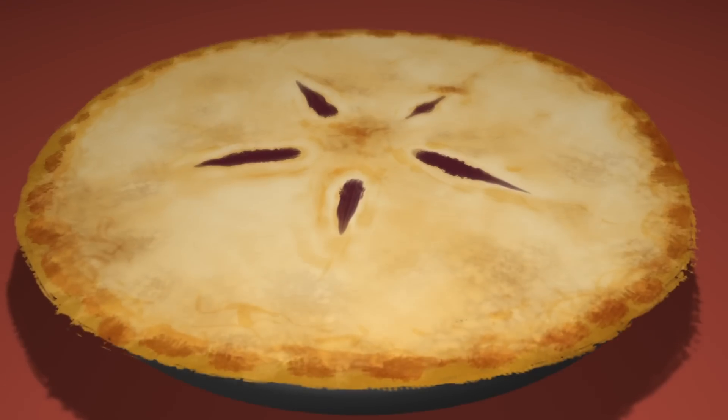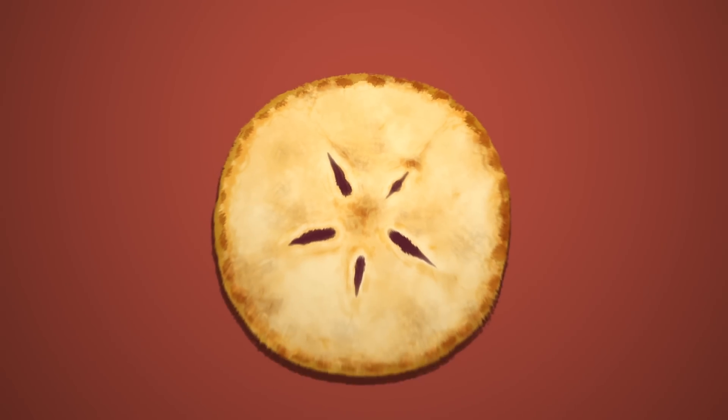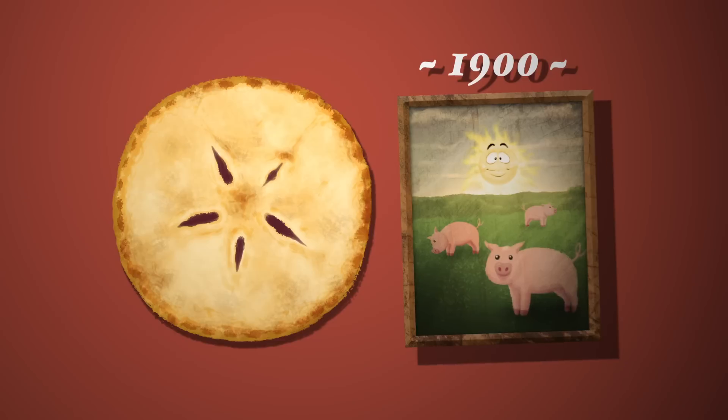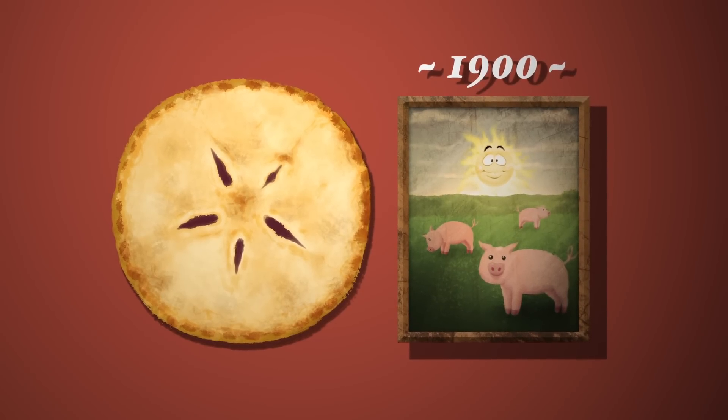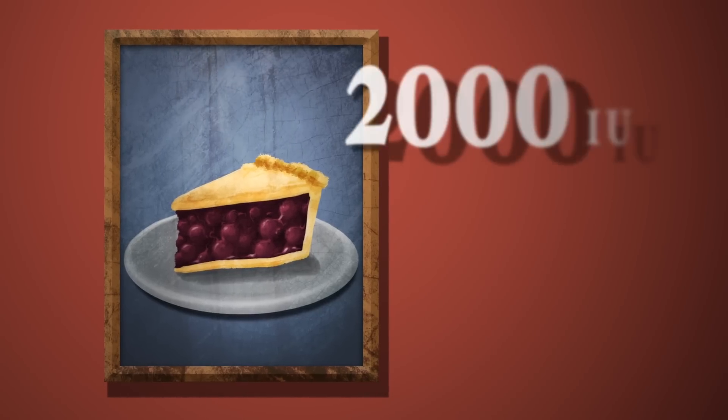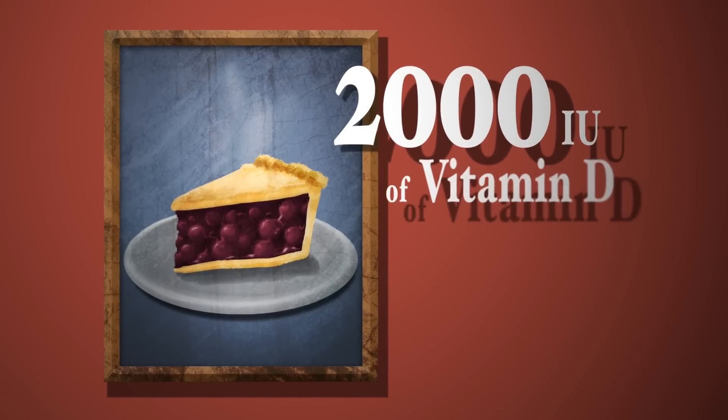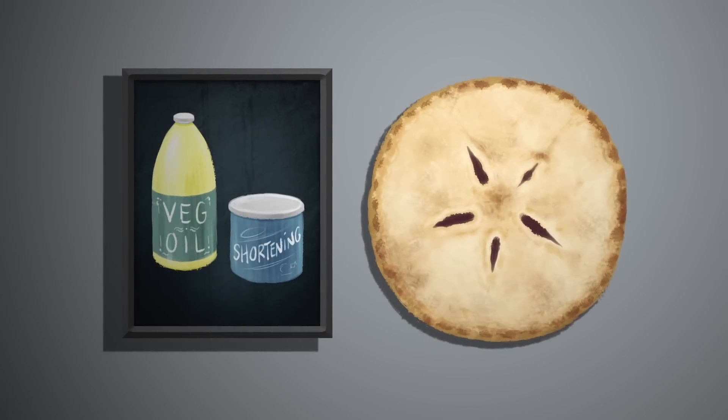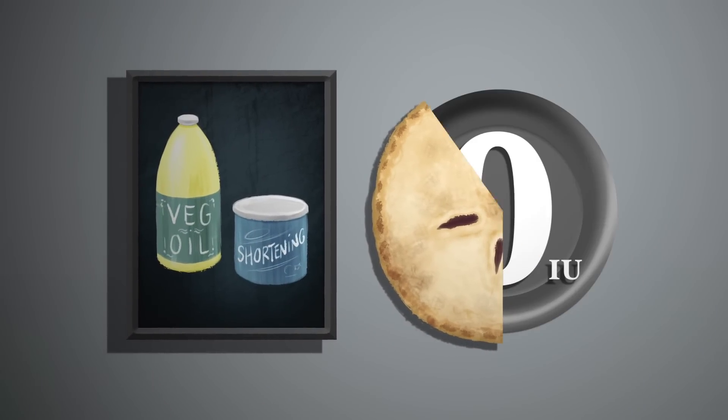Even food no longer provides as much vitamin D as it did 100 years ago. For example, in 1900, pie crust was made with lard from pigs raised outdoors. Back then, just one piece of a double-crust pie provided 2,000 international units of vitamin D. Today, pie crust is made from vegetable oil or shortening. How much vitamin D? Zero.